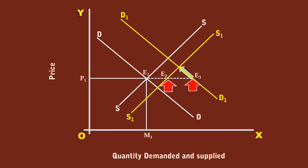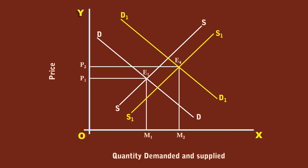The buyers compete with one another by being willing to offer a higher price. They move up along the demand curve D1D1. As the price moves up, the sellers expand the supply by moving up along the supply curve S1S1. At last, a new equilibrium is reached at E4, where the new demand curve D1D1 cuts the supply curve S1S1. The new price is P2 and the new equilibrium quantity is M2.